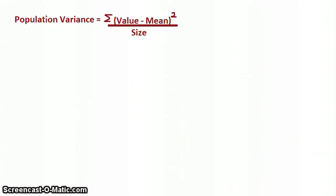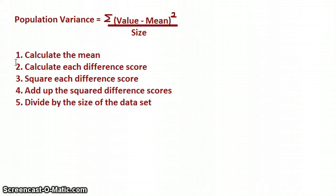To calculate the population variance, we take each value in our data set, we subtract from it the mean — that's called a difference score — we square it, then we add up all those squared difference scores, and then we divide by the size of our data set, that is, the number of values. The written steps are: step one, calculate the mean; step two, calculate each difference score; step three, square each difference score; step four, add up the squared difference scores; and step five, divide by the size of the data set.